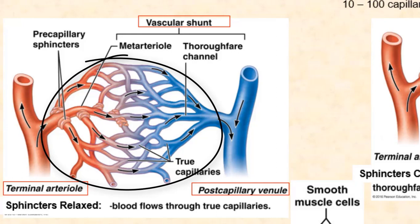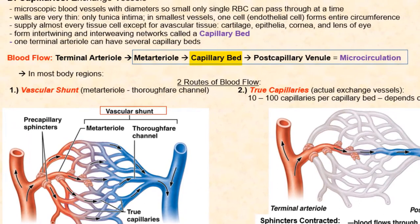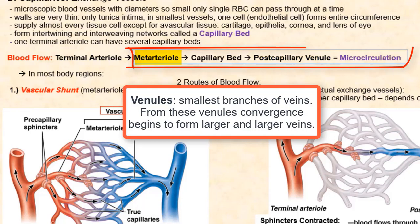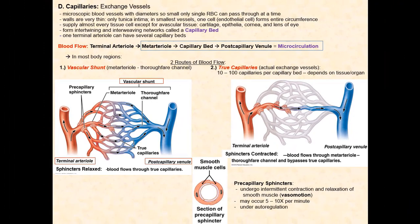From the capillary bed, blood then flows into the post capillary venule. We have terminal arteriole to meta arteriole to capillary bed to post capillary venule. Blood flow from meta arteriole to capillary bed to post capillary venule is referred to as microcirculation. At any given capillary bed, there will be two paths or routes for blood to flow through.